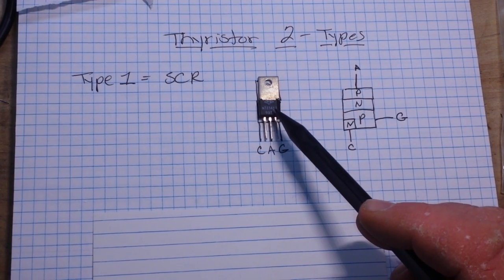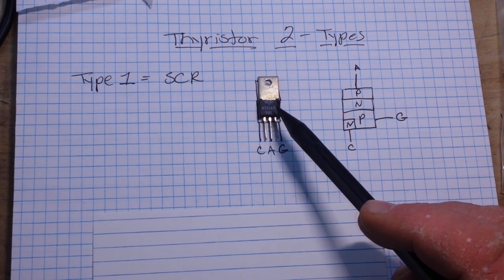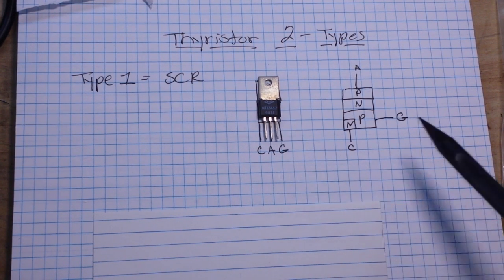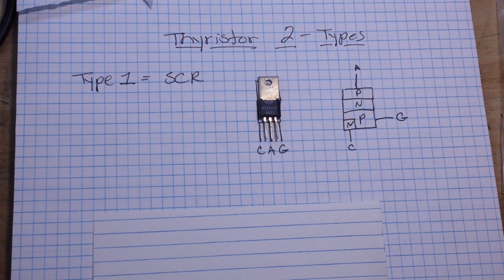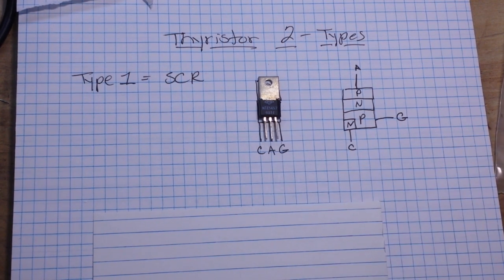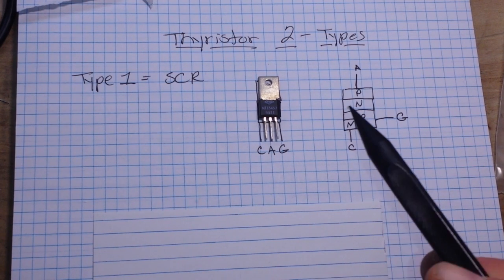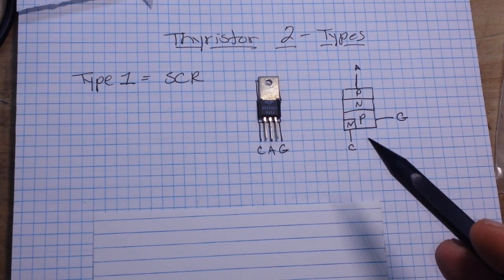and here I have one. This is the NTE 5457 with a sensitive gate. It can take a surge up to 20 amps, its standard RMS is four amps. Let's see, three milliamps is the hold current and it's good up to 400 volts. So that's a tough little component right there.